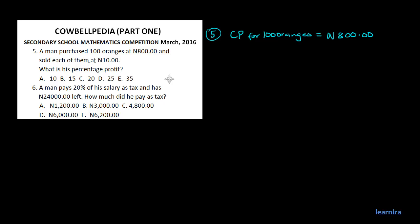The next statement says he sold each of them at 10 naira. So the selling price of one orange is equal to 10 naira.